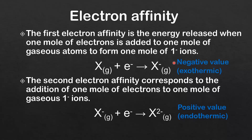The first electron affinity of an atom has a negative value, which means it's exothermic — energy is released. However, the second electron affinity has a positive value, meaning energy is absorbed and it's endothermic. The reason for this is the extra repulsion as you try to add an electron to a negative ion.